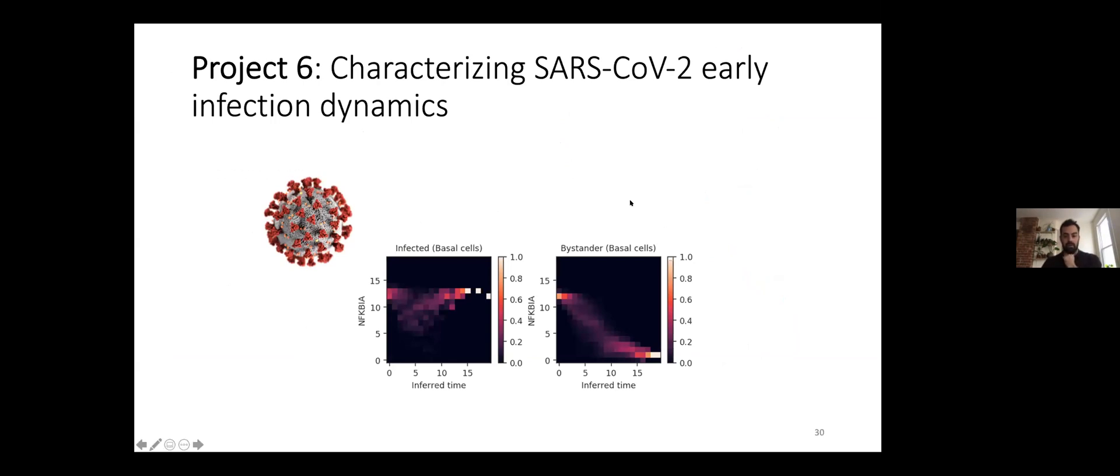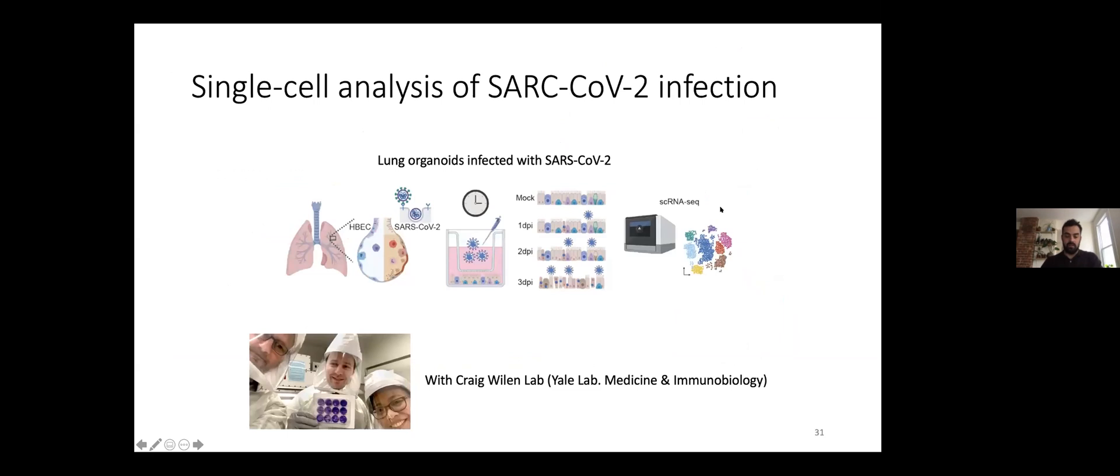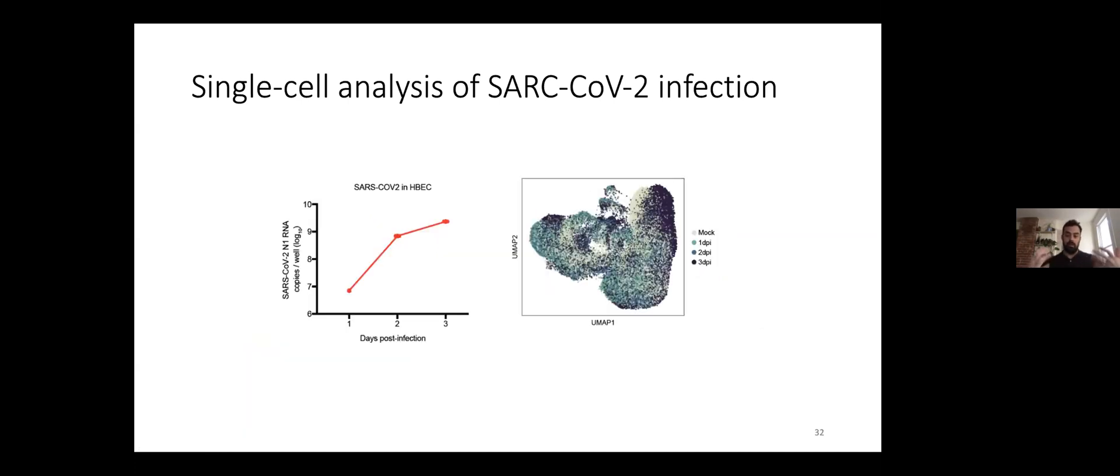Finally, we also have been involved in several COVID-related projects. In this project we are interested in infection dynamics. This is a collaboration with the Weiland Lab where we measure viral infection in an in vitro system. The Weiland Lab in lab medicine and immunobiology grows lung organoids and infects these with different viruses, including the SARS-CoV-2 virus, and then measures them using single cell sequencing over time. We use data to build models and try to predict viral dynamics—which cell types are infected, how are they infected, are there certain cell types and genes that give cells a certain protection?